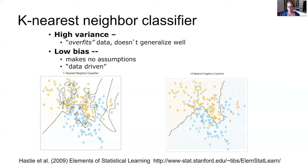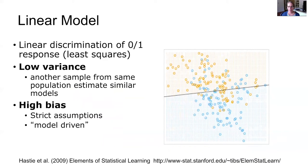At the other end of this continuum, we have the classic linear model — illustrated here using linear discriminant analysis — where the linear discriminant function is fitted as a straight line estimated using least squares. This type of model, such as classical inferential statistical models, is said to have high bias because of very strict assumptions. On the other hand, they have low variance — another sample from the same population would probably estimate a similar model, the same line.